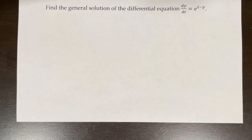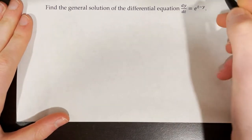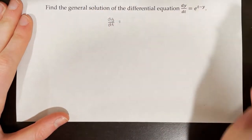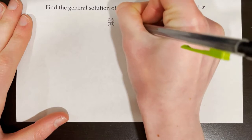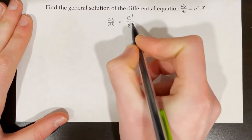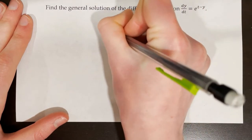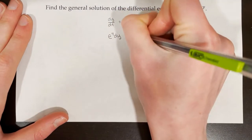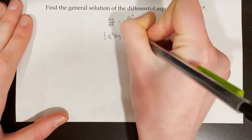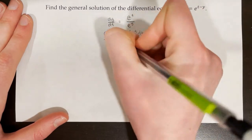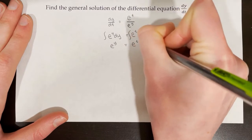Find the general solution of dy/dt = e^(t−y). We first rewrite e^(t−y) as e^t / e^y using exponent rules. So dy/dt = e^t / e^y. Now we separate variables: multiply both sides by e^y and then by dt to get e^y·dy = e^t·dt. Taking the integral of both sides, since e^y is its own antiderivative, we get e^y = e^t + c.